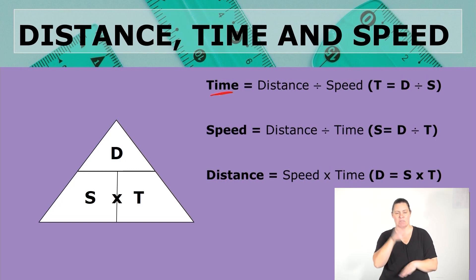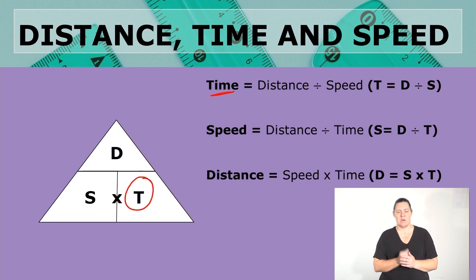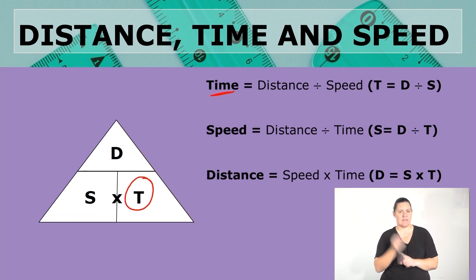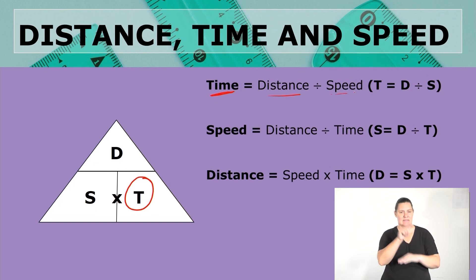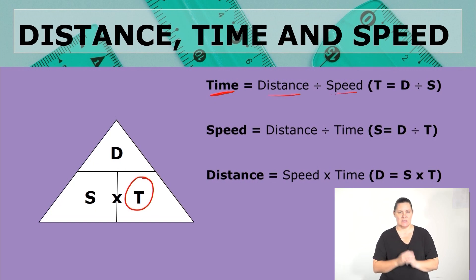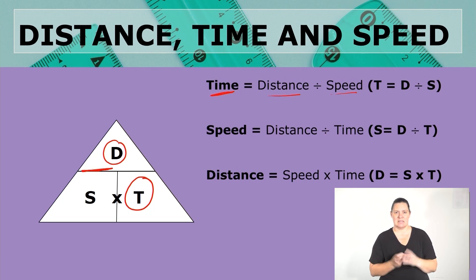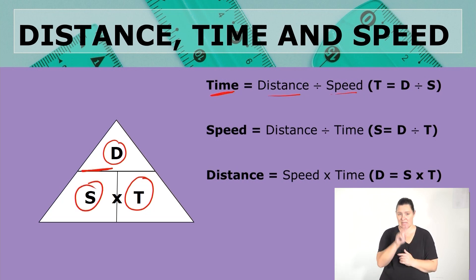When we are looking at time, which is the one over here, the formula to find time is distance divided by speed. That is distance divided by speed. Can you see how this triangle makes things easier?